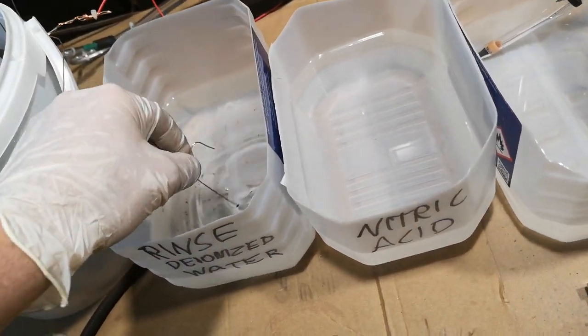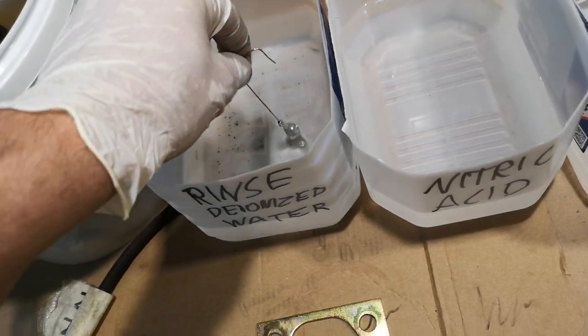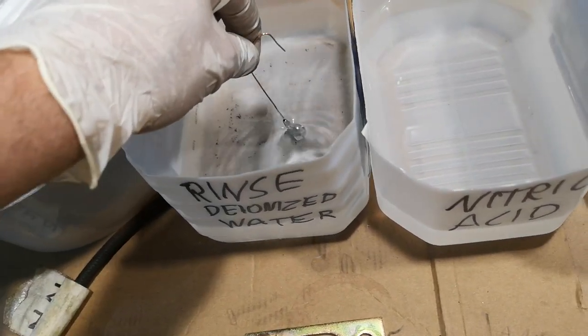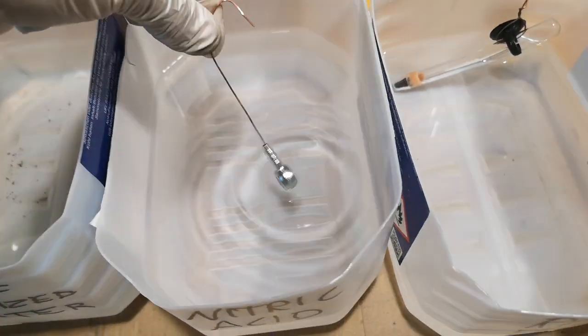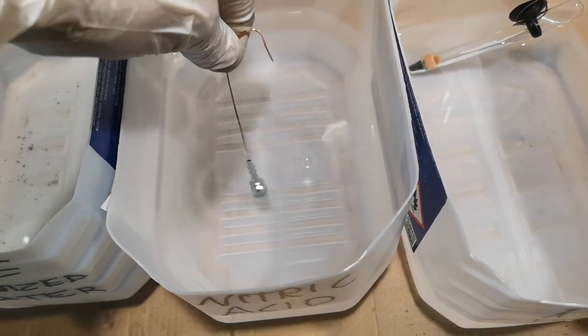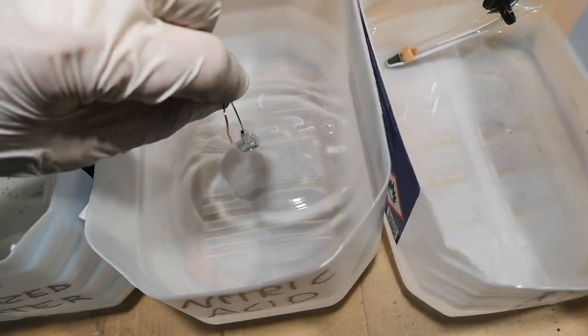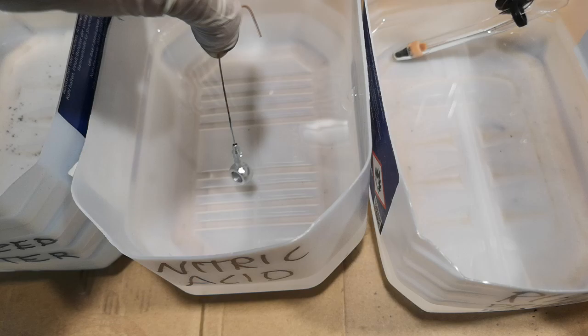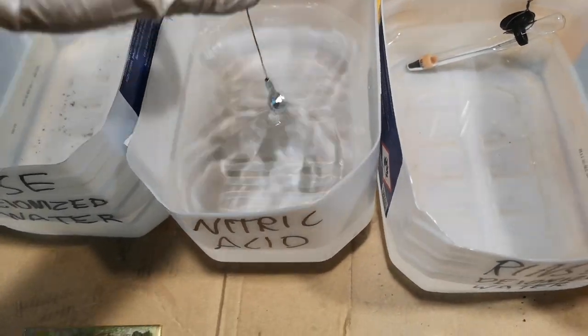So after rinsing, we go into... it changes color a bit when rinsing. And it again changes color a bit when it goes into the acid. It's more silvery. You don't want to have it in the acid too long because it actually dissolves the zinc.